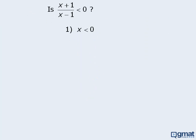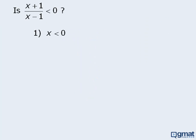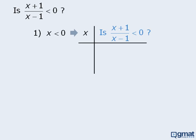Here's another question. We want to determine whether (x+1)/(x-1) is less than 0. Statement 1 tells us that x is less than 0. Is this statement sufficient? If you're not sure where to begin, why not try the table method and see what information you can collect? We'll choose values for x such that x is less than 0, then using these values, we'll ask our target question: is (x+1)/(x-1) less than 0? Keep in mind that x must be less than 0, so we cannot plug in numbers like 0, 1, and 10.